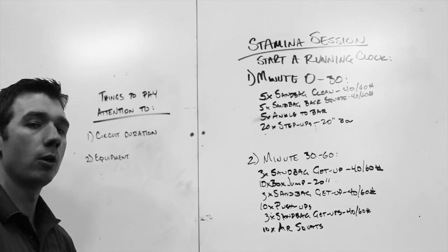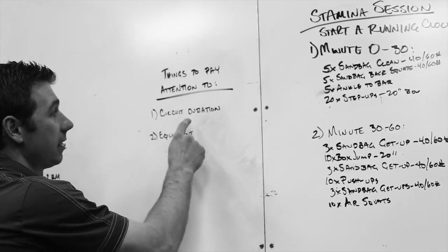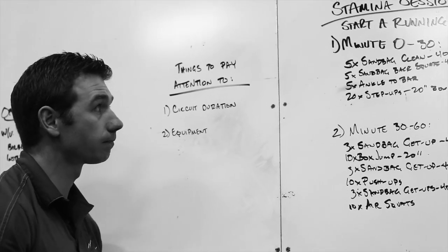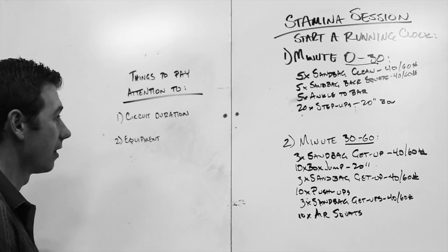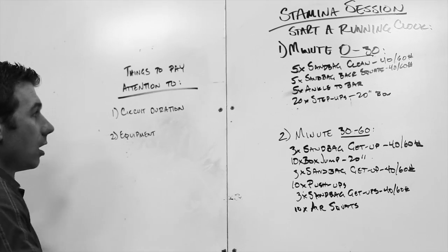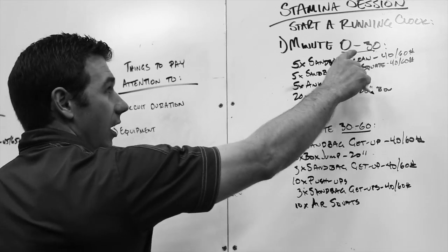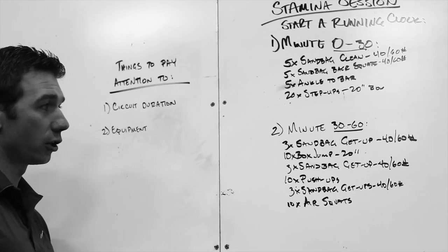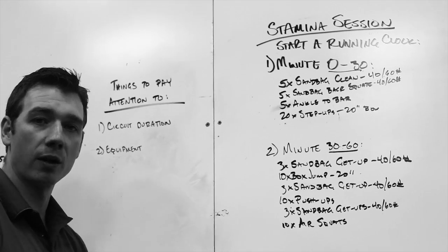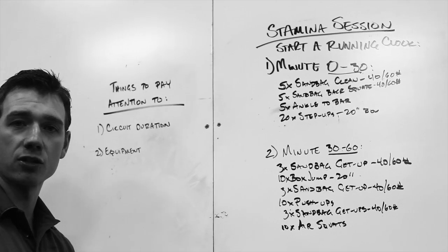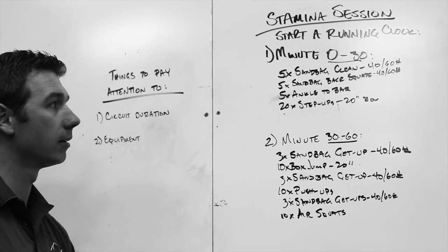A couple things in general that we want you to pay attention to whenever you're looking at a stamina session is simply the circuit duration. In this case I've got two 30 minute circuits and then also the equipment. We will typically make this as easy as we can for you guys. Two 30 minute circuits is really easy to remember. You can set a timer if you want, and whenever it beeps you're going to switch and do the next circuit.